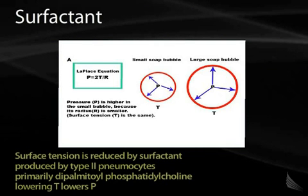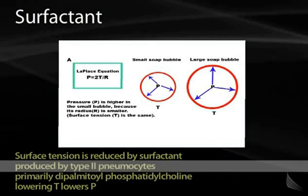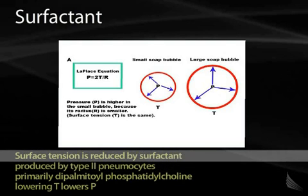Now let's briefly introduce the concept of surfactant. Surfactant is a molecule made by type 2 pneumocytes in the lung. What surfactant does is normalize the surface tension of the alveoli. Surfactant can be thought of like a detergent — if we put soap in water, we can blow bubbles that don't pop; the soap acts as a detergent to help keep the bubbles from popping. Surfactant does that in the lungs.